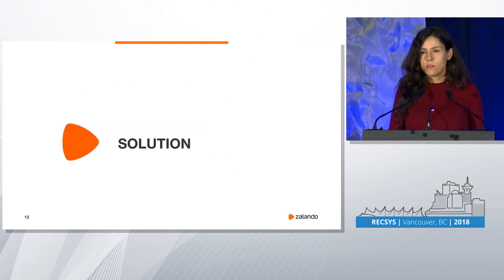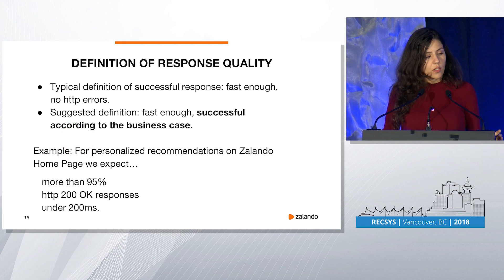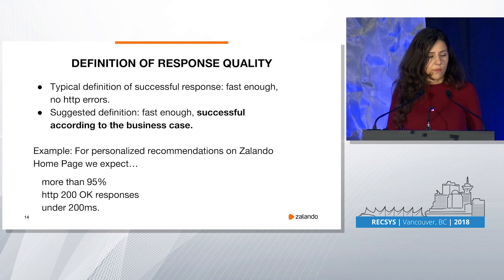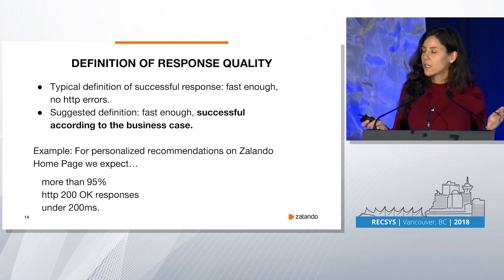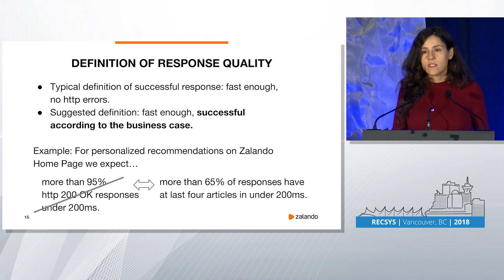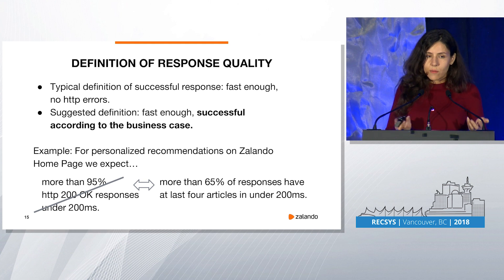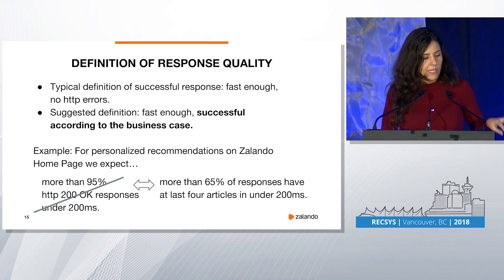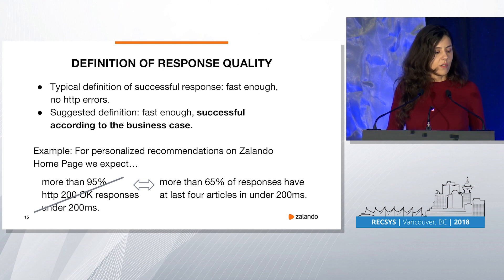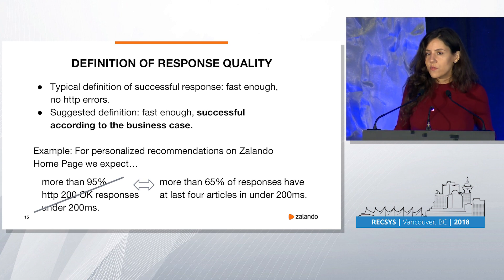I will now propose a solution that I implemented in my team. Let's talk about the definition of response quality. Typically in microservices — or in any software — we say it has to be fast enough and there have to be no HTTP errors, then we consider it a successful response. I suggest we redefine that and say it still has to be fast enough, but also it has to be successful according to your business case. For example, let's say you're serving personalized recommendations on the homepage. In the old world you'd say you want more than 95% HTTP 200 in under 200 milliseconds. But that also covers empty responses, and we would all agree that is not a successful recommendation.